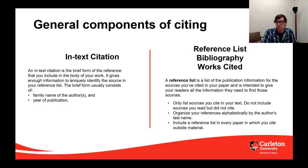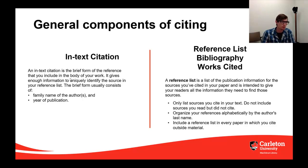Citations are usually comprised of two components: the in-text citation and the reference list, which can go by different names depending on which citation style you're using — for example, it might be known as a bibliography or a works cited page. Your in-text citations are a brief form of the reference that you include in the body of your work. It gives enough information to uniquely identify the source in your reference list, and they usually consist of things like the family name of the author or authors and the year of publication.